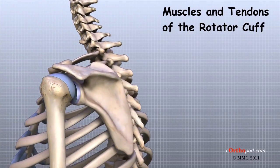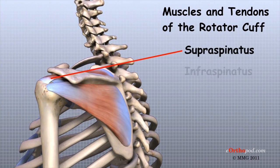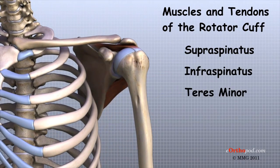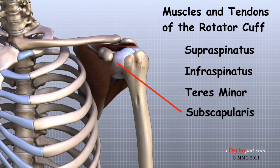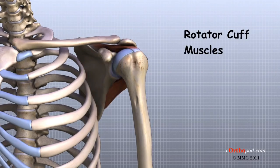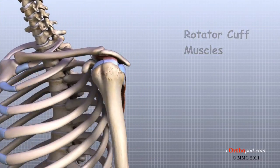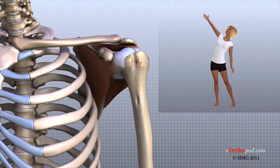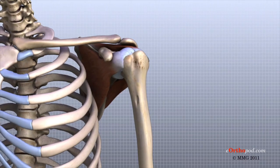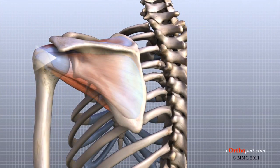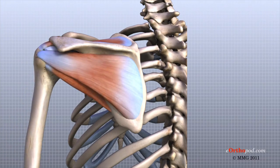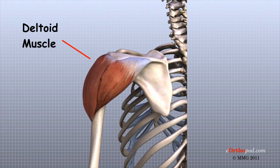Four tendons connect the deepest layer of muscles, the rotator cuff muscles, to the humerus. Just before these muscles attach to the upper end of the humerus, they join together to form a single tendon called the rotator cuff. The rotator cuff muscles lie just outside the shoulder joint. These muscles help raise the arm from the side and rotate the shoulder in many directions. The rotator cuff muscles and tendons also help keep the shoulder joint stable by contracting and holding the humeral head tightly in the glenoid socket as the humerus moves.